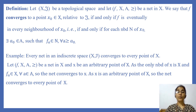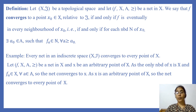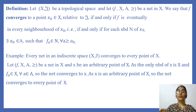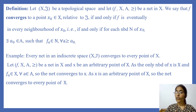We will consider an example. Every net in an indiscrete space (X, I) converges to every point of X. Let (F, A, ≥) be a net in X and let x be an arbitrary point of X. The only neighborhood of x is the whole space X, and F(a) ∈ X for every a ∈ A since F maps into X. So the net converges to x, and since x was arbitrary, the net converges to every point of X.